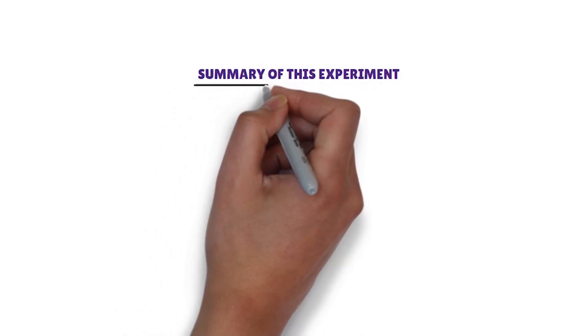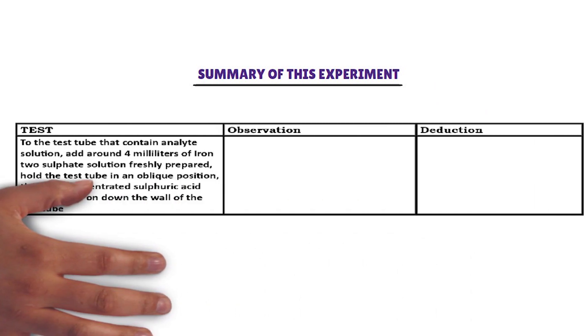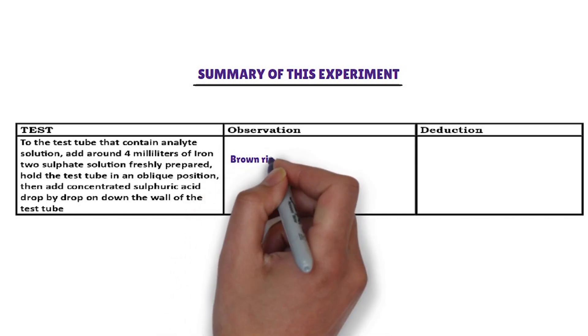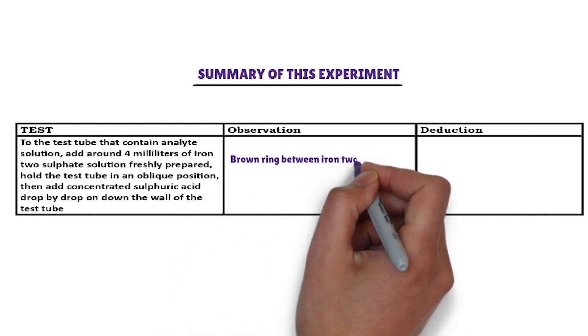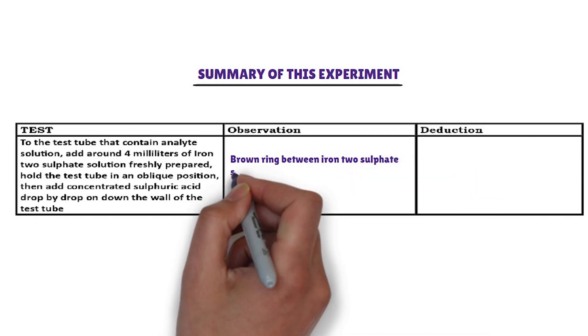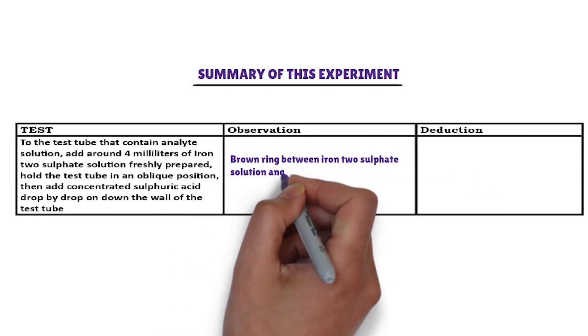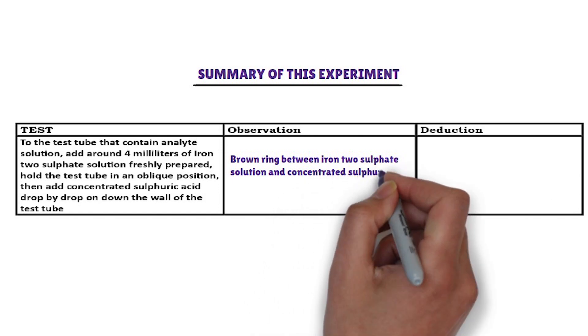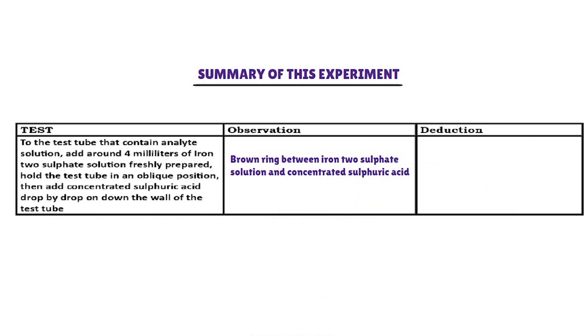Summary of this experiment. In test tube that contains analyte solution, 4 milliliters of iron-2-sulfate solution is added followed by equal amount of concentrated sulfuric acid. The anion that reacts with iron-2-sulfate solution followed by concentrated sulfuric acid to form brown ring is nitrate.